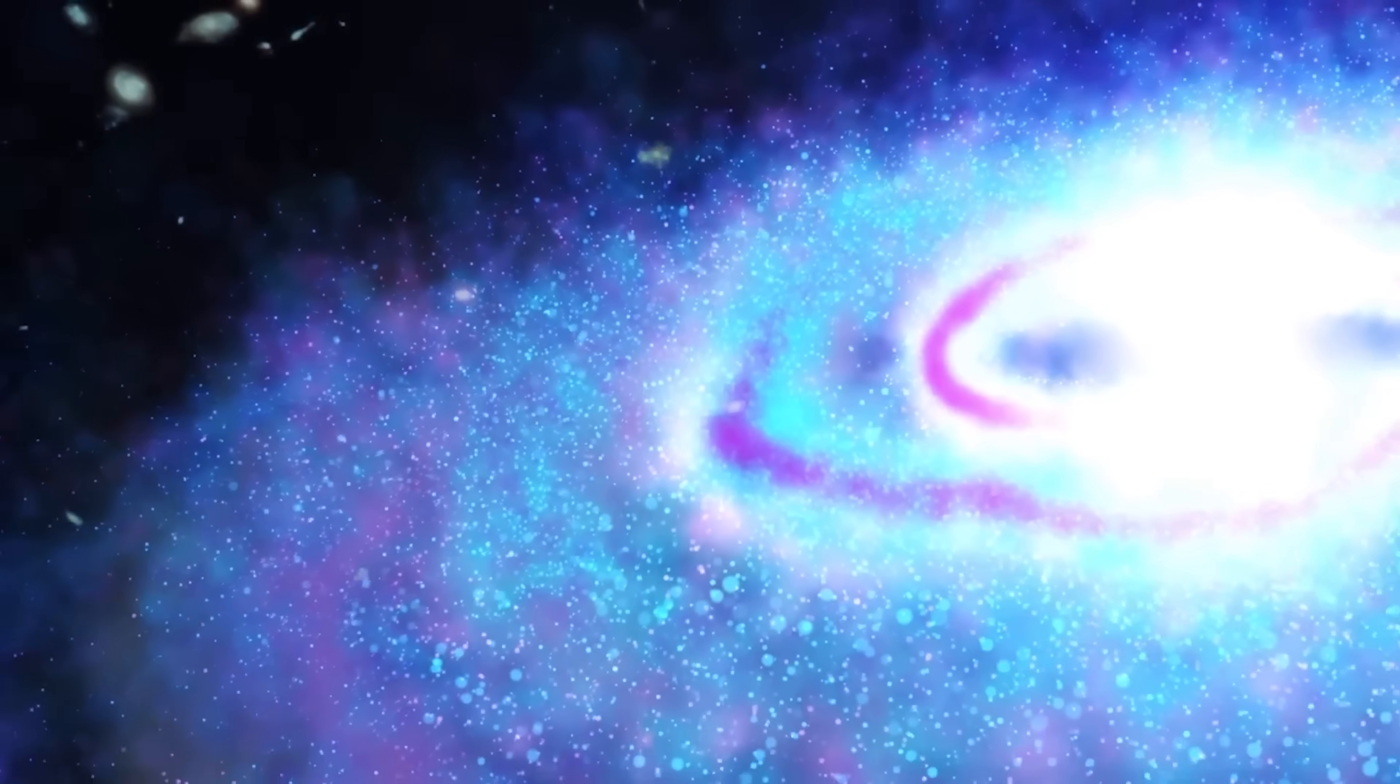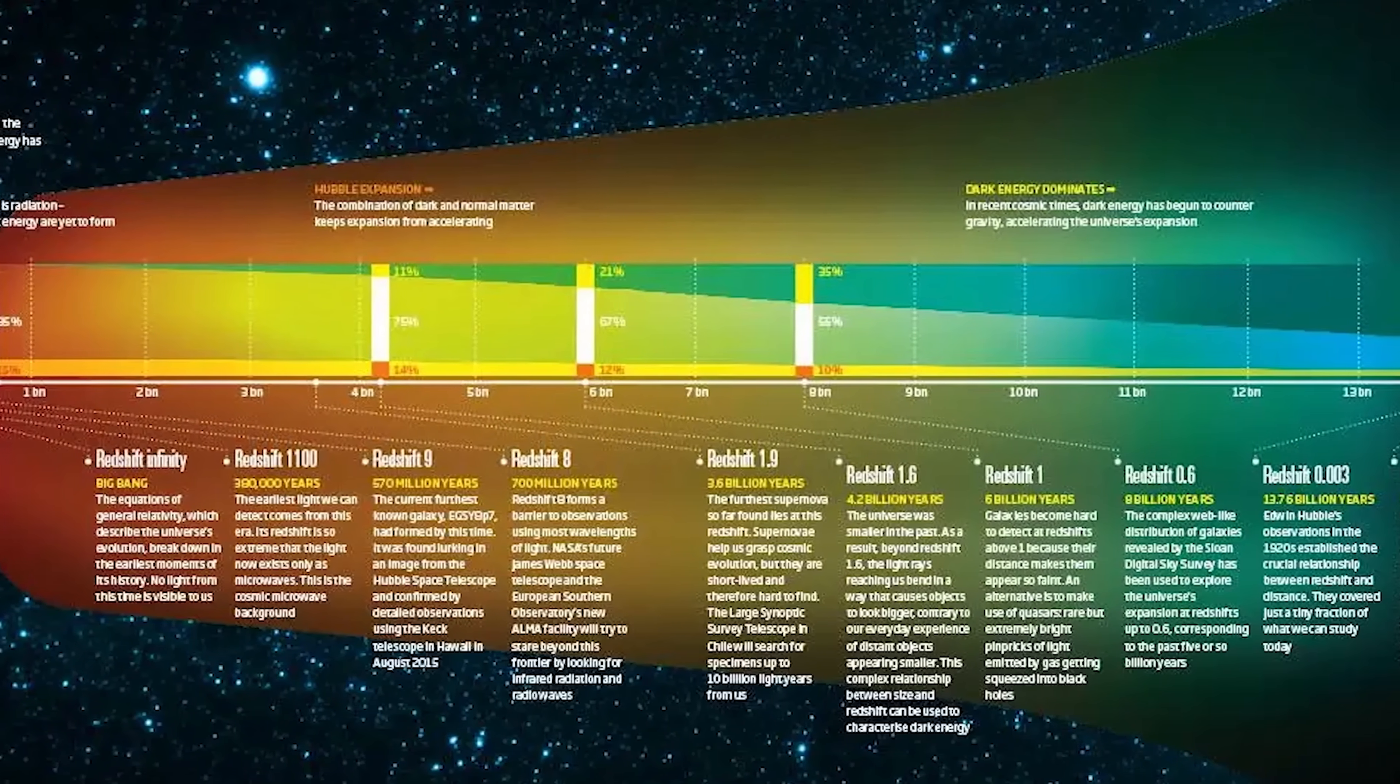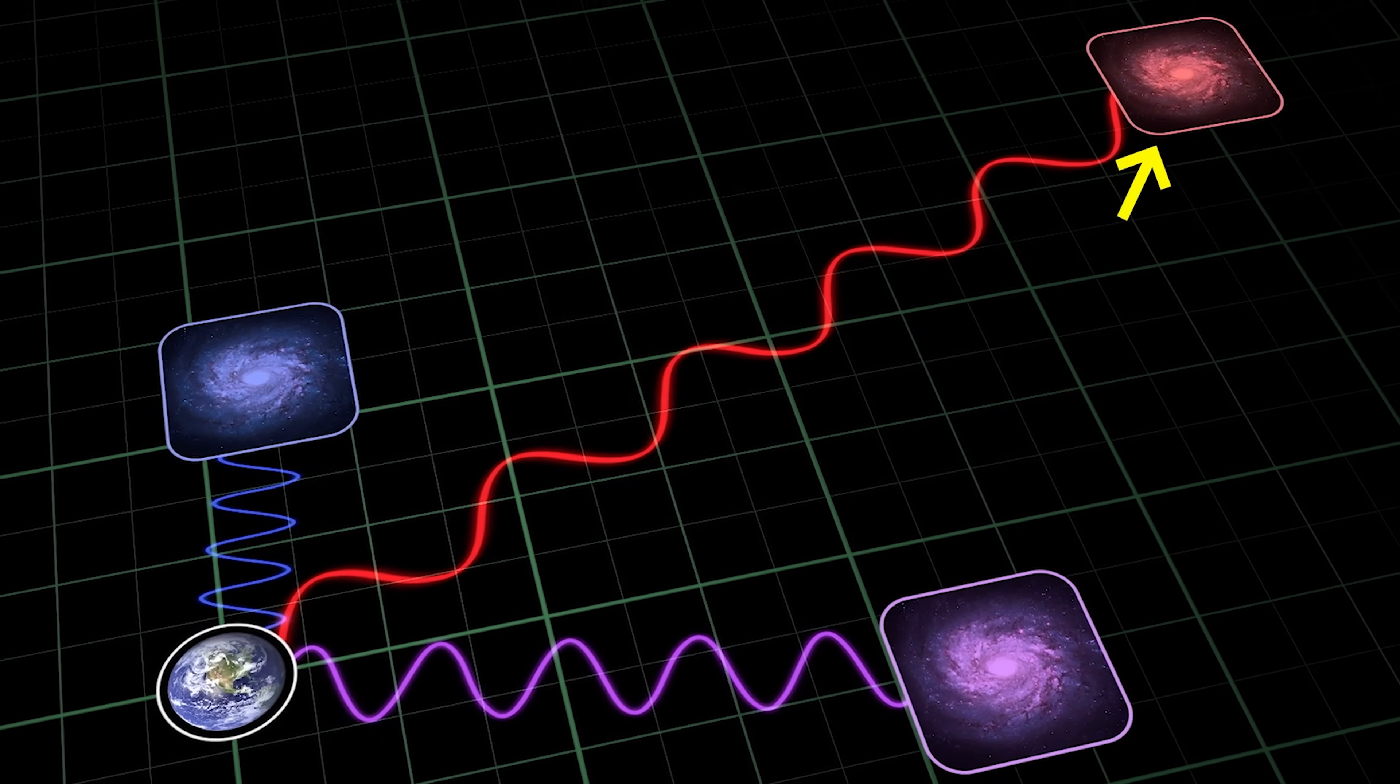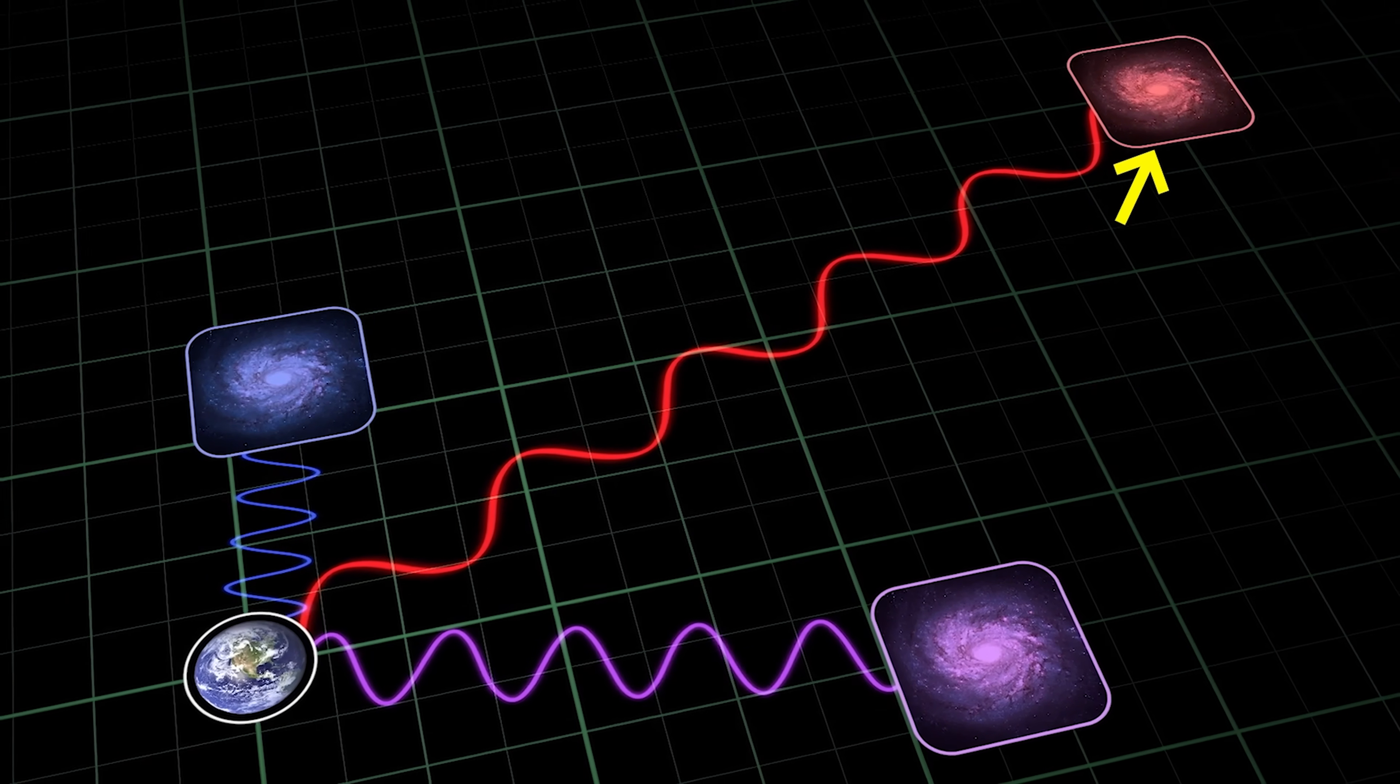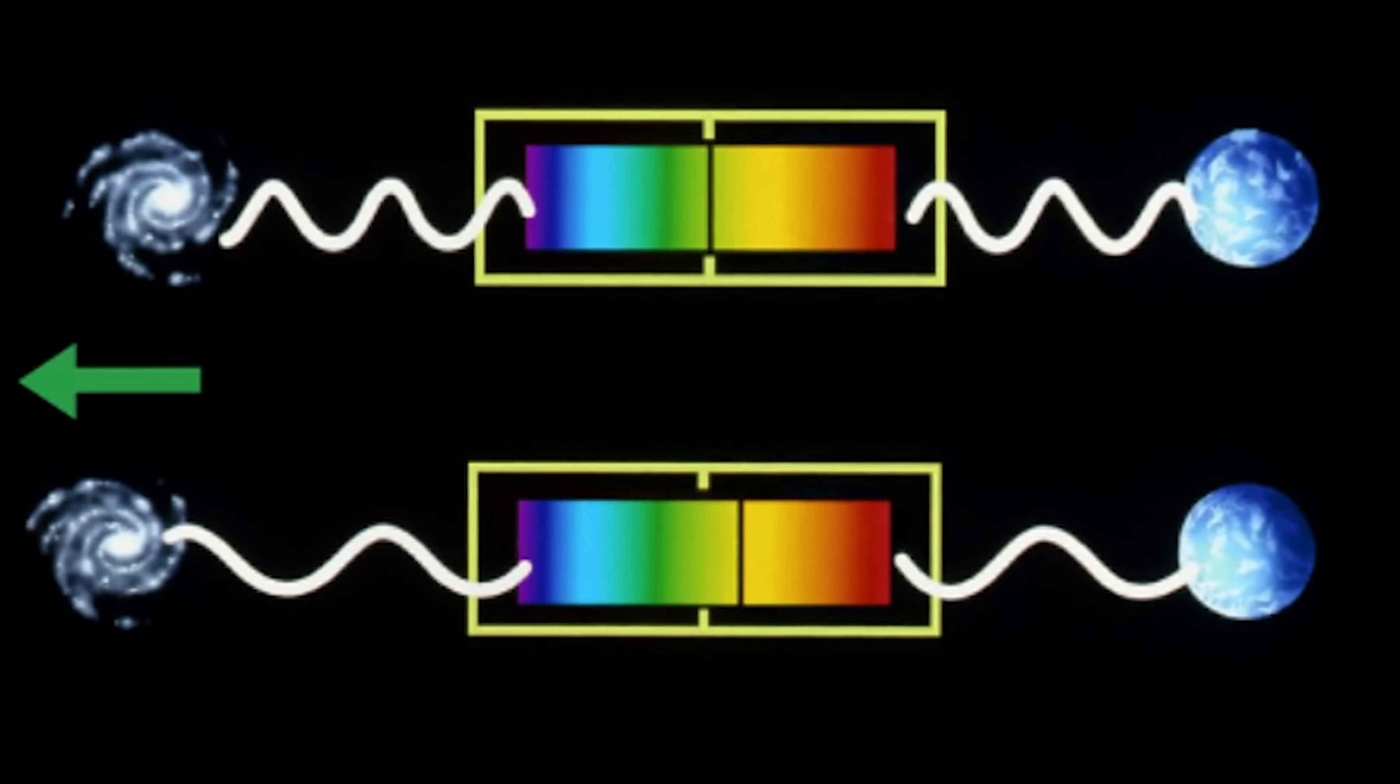Infrared observations are vital for studying the earliest galaxies, whose light has been stretched, or redshifted, as the universe expands. Redshift describes how light shifts toward longer, redder wavelengths when objects move away from us. The greater the redshift, the farther and older the galaxy.